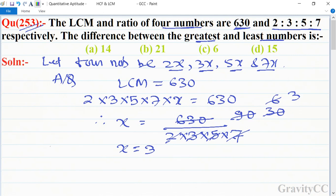According to the question, we will find the difference between the greatest and least numbers. Here the greatest number is 7x and the least one is 2x. Therefore, 7x - 2x = 5x.